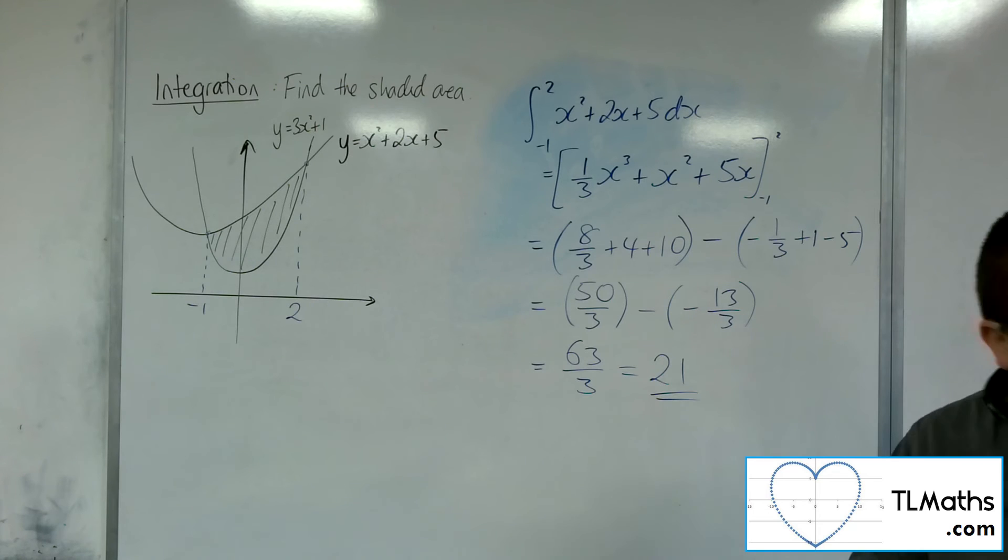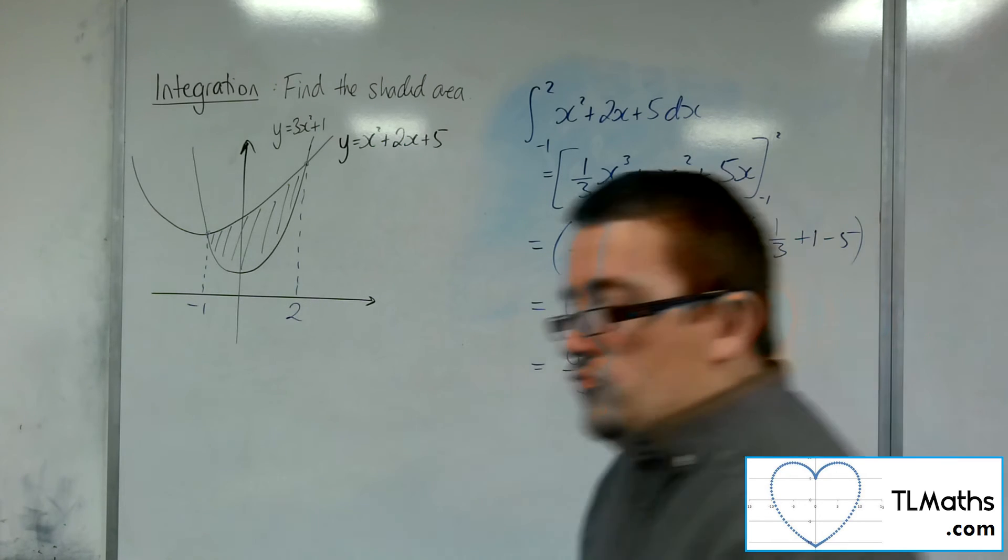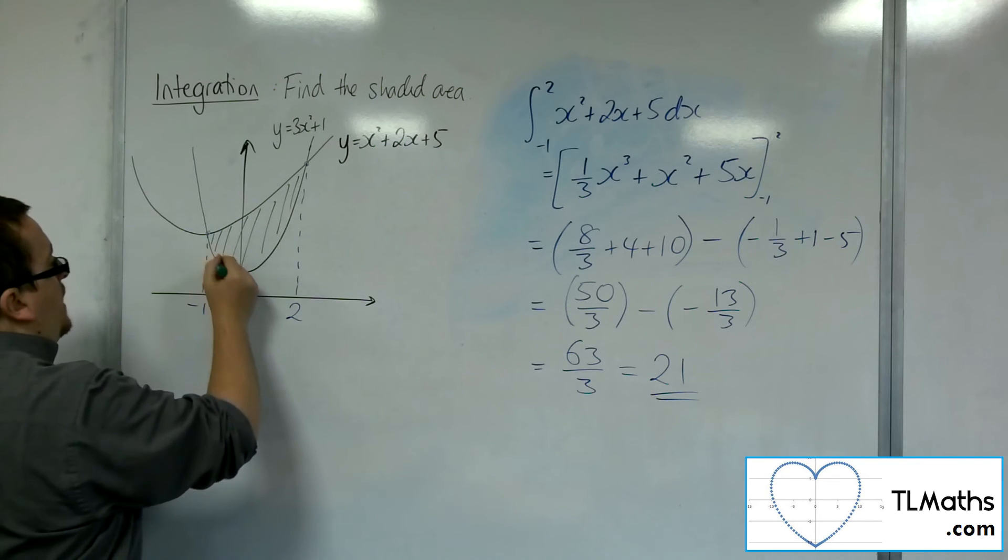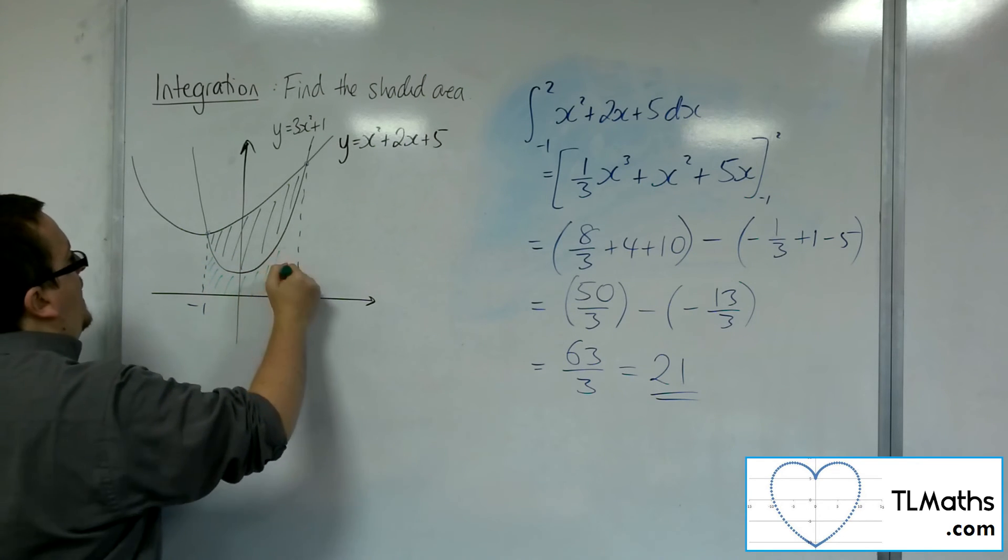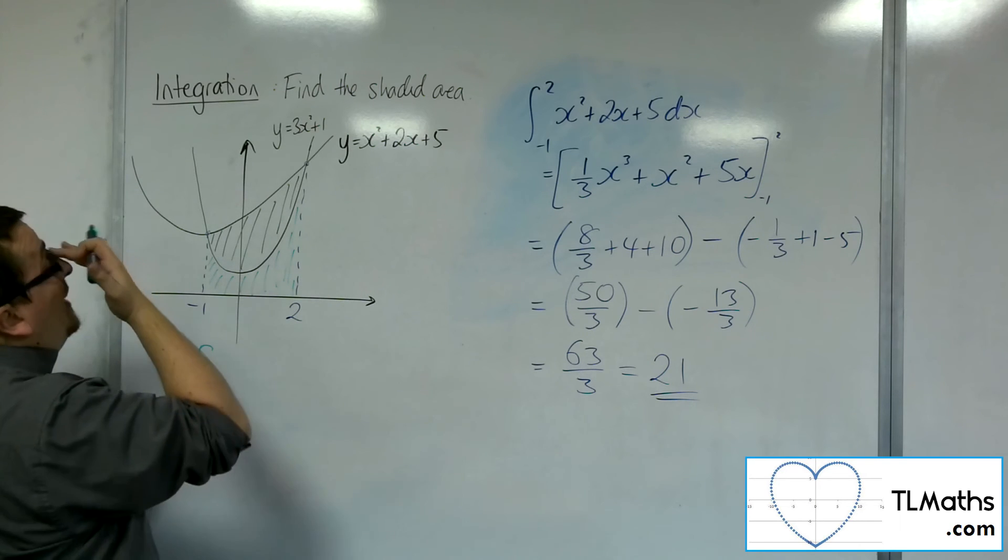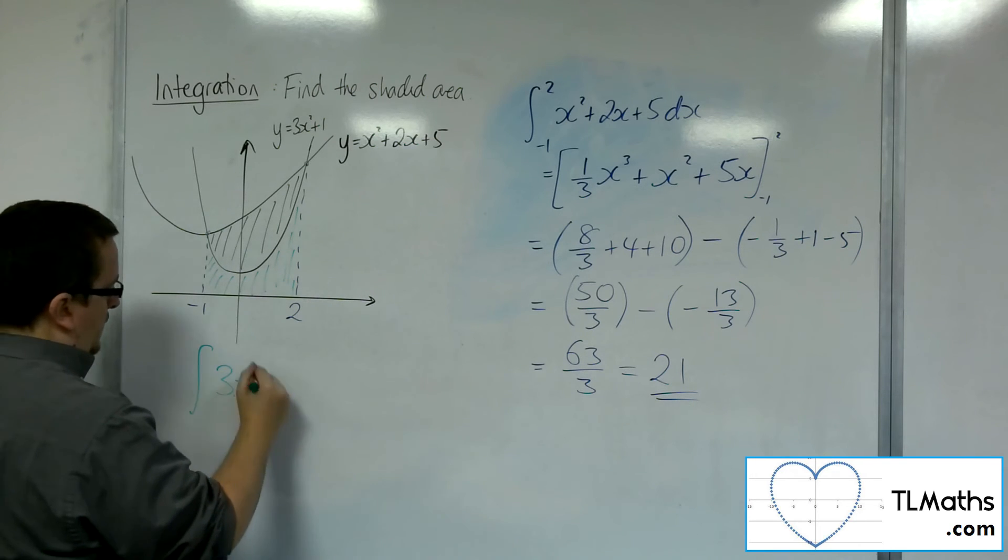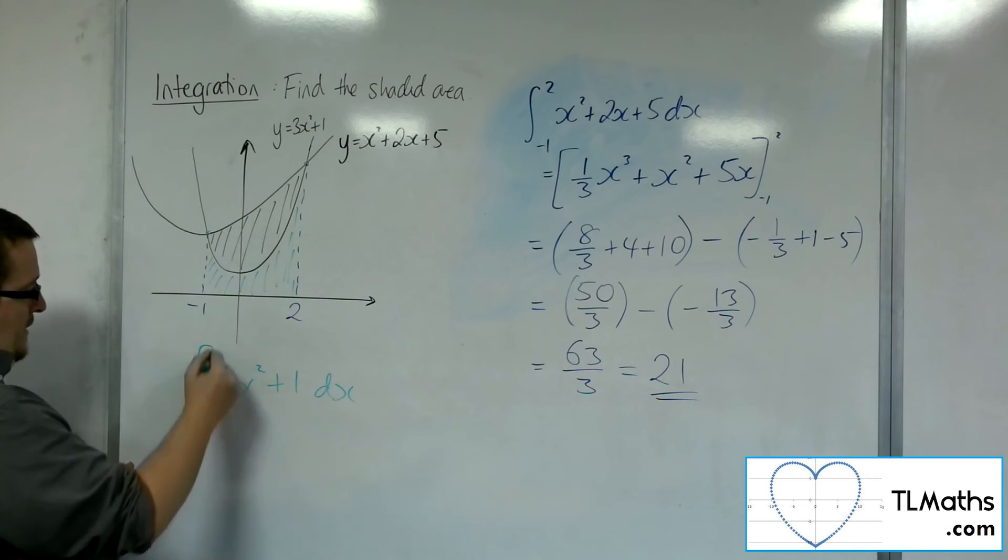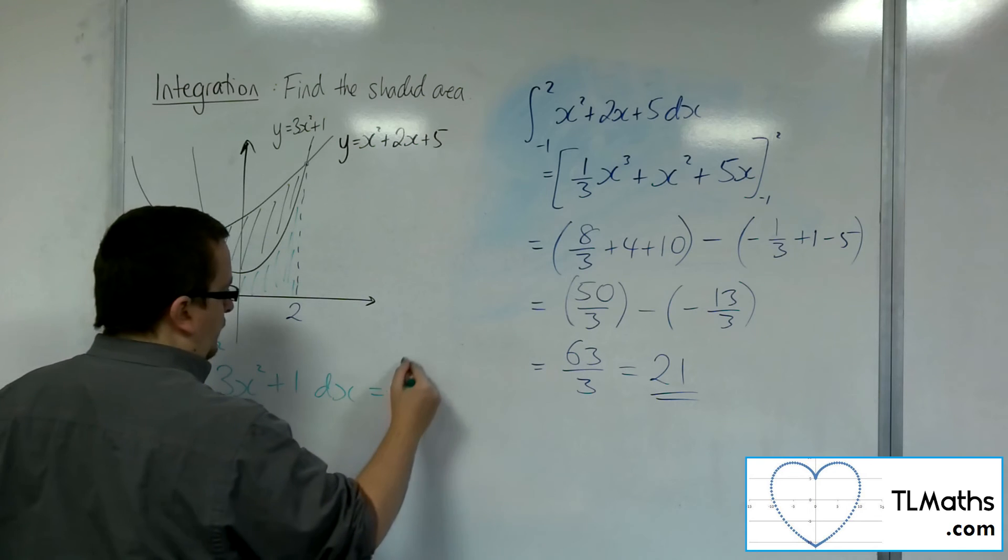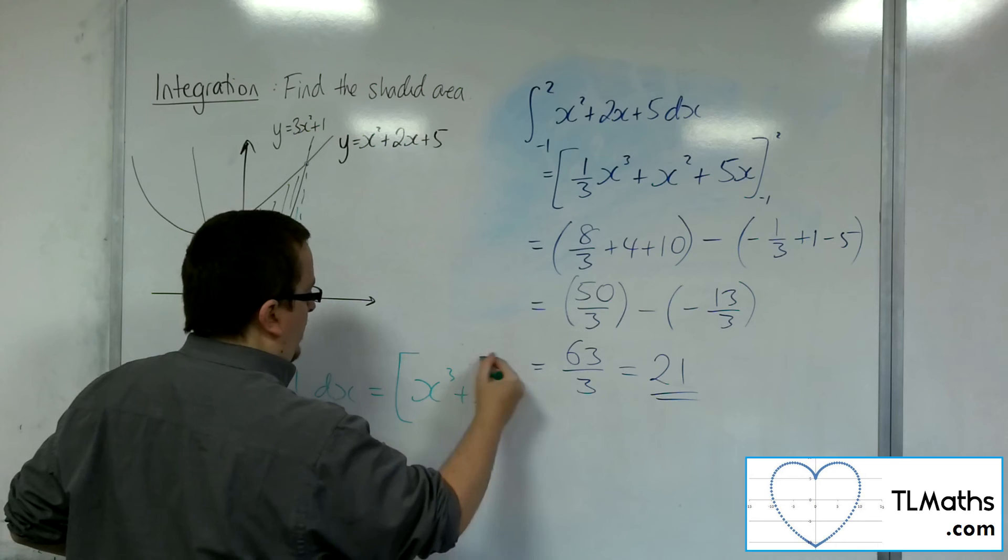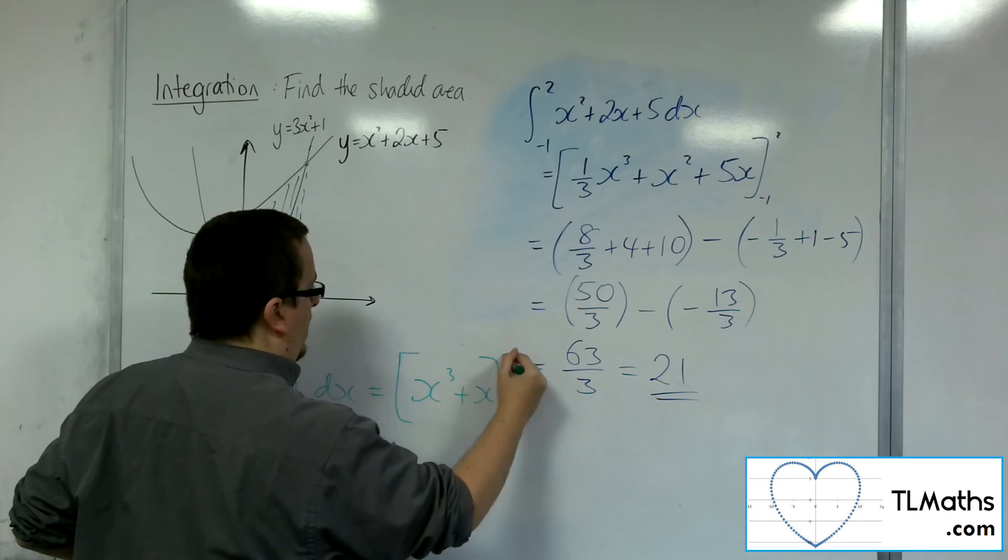So now, if I do the next bit in green. So I'm going to get that area here. We're going to integrate the 3x squared plus 1 between minus 1 and 2. So 3x squared integrates to x cubed. Then we've got the plus x, the value added between minus 1 and 2.